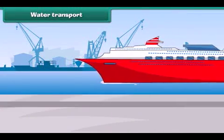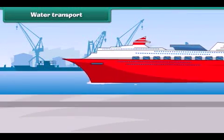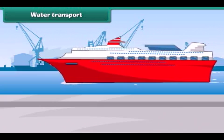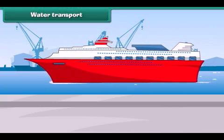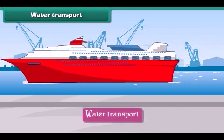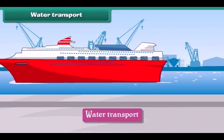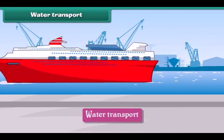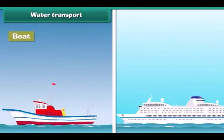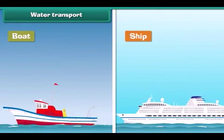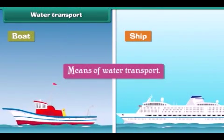Water transport: The movement of goods and passengers on water is called water transport. The vehicles that carry goods and passengers through waterways are called means of water transport. Boats and ships are the means of water transport.